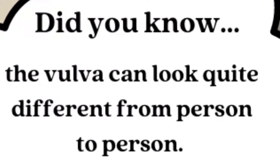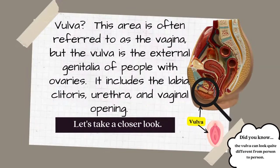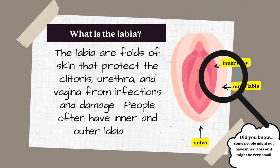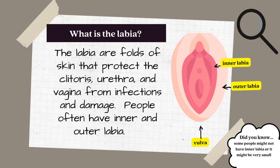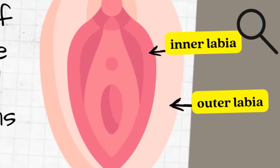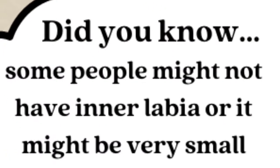Did you know the vulva can look quite different from person to person? The labia are folds of skin that protect the clitoris, urethra, and vagina from infections and damage. People often have inner and outer labia. Did you know some people might not have inner labia, or it might be very small?